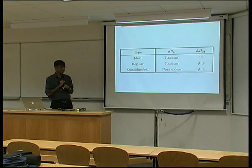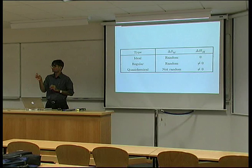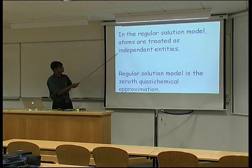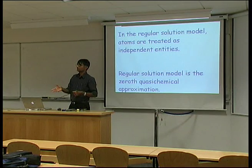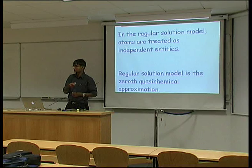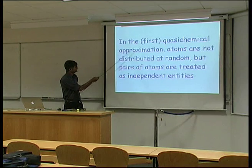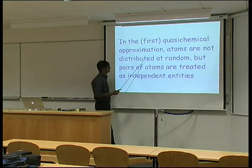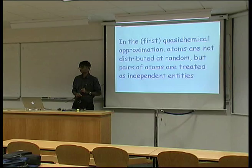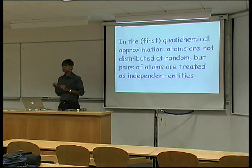I'm going to deal with a non-random distribution of atoms so that we can calculate the entropy of mixing accurately, but we'll assume that the entity we are placing is pairs of atoms, and pairs of atoms are independent. In the regular solution model, atoms are treated as independent so they are randomly distributed — you can regard the regular solution model as a zero approximation. In the first approximation of the quasi-chemical model, atoms are not distributed at random, but pairs of atoms are treated as if they are distributed randomly on a lattice, giving a more accurate calculation of the entropy of mixing. It's quite an important model used routinely in the design of metallic materials.